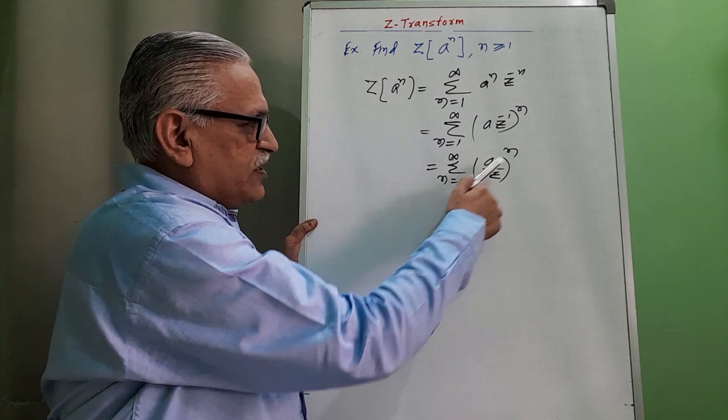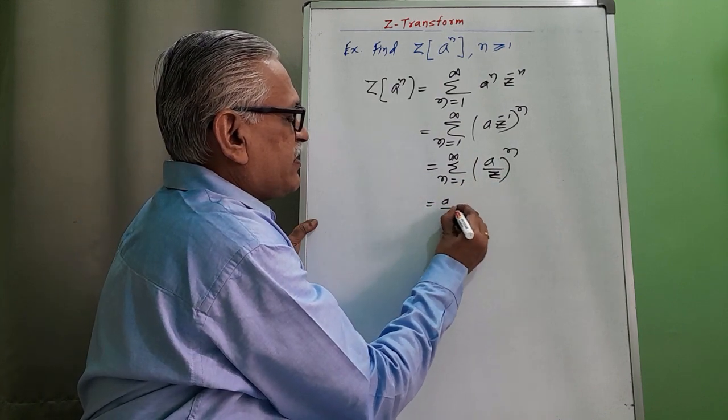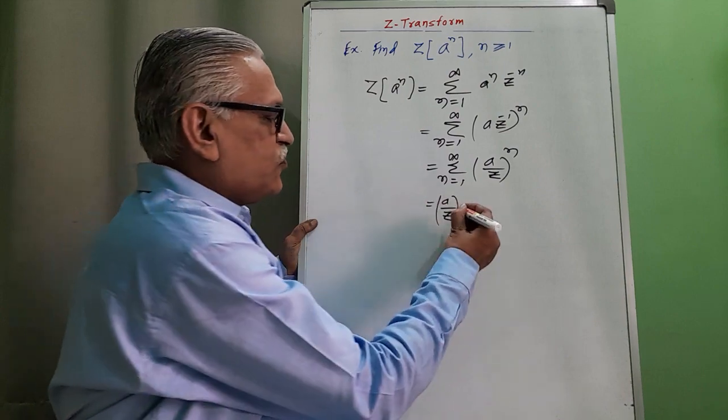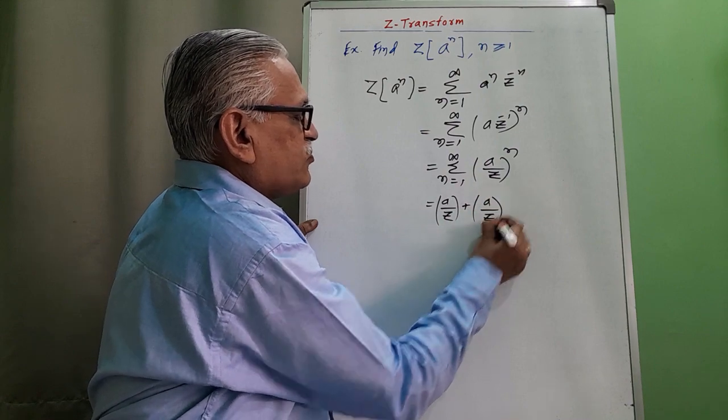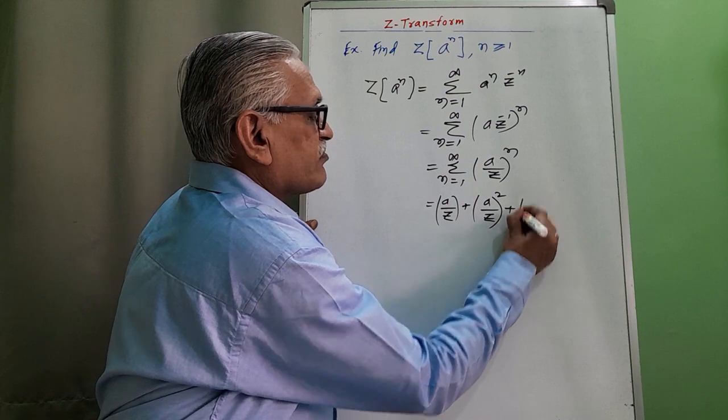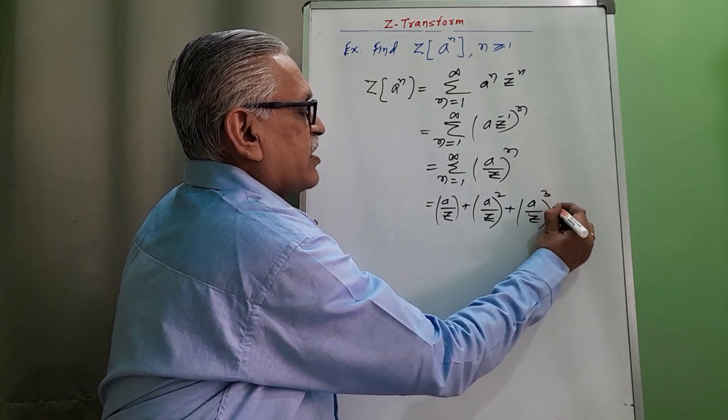Then substituting the first value of N as 1, we get that term as A by Z. For N equal to 3, we get A by Z cubed, and so on.